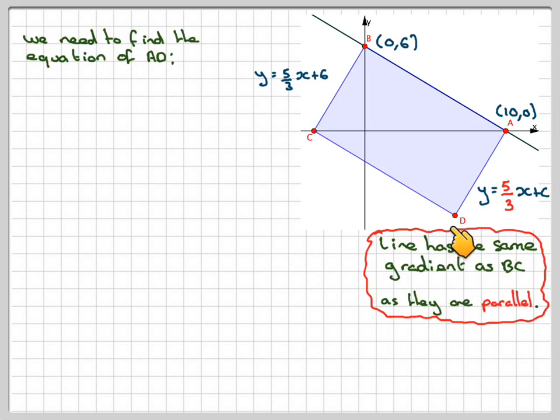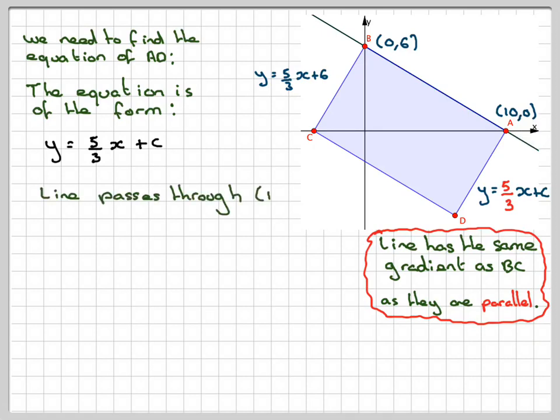So how are we going to do that? Well, the equation is of this form Y = 5/3X + C. But we know this line goes through the point (10, 0). So when X is 10, Y is 0. So the line passes through the point (10, 0). So put 0 = 5/3 times 10 plus C. So 0 = 50/3 + C. And therefore C = -50/3. So we did say it will be negative down here somewhere, which seems about right.